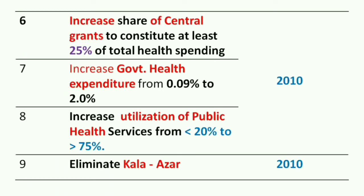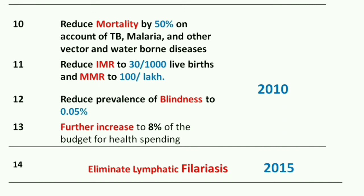Expanding the 2010 targets: first, increase the share of central government grant to constitute at least 25% of total health spending. Second, increase government health expenditure from the current 0.09% to 2%. Third, increase utilization of public health services by the public from 20% to 75%. Fourth, eliminate Kala-azar.